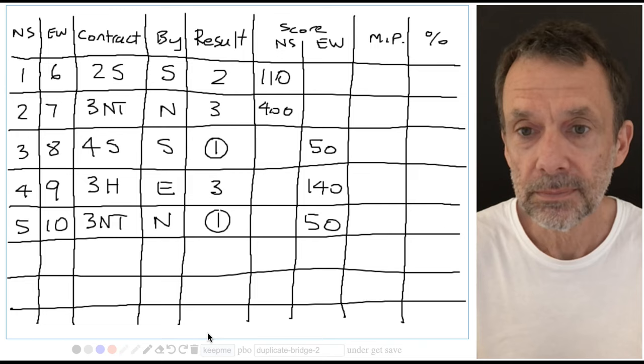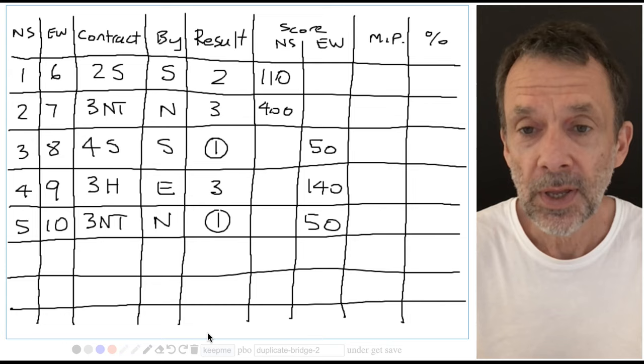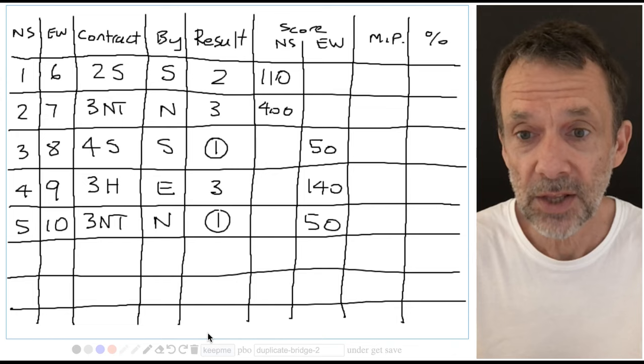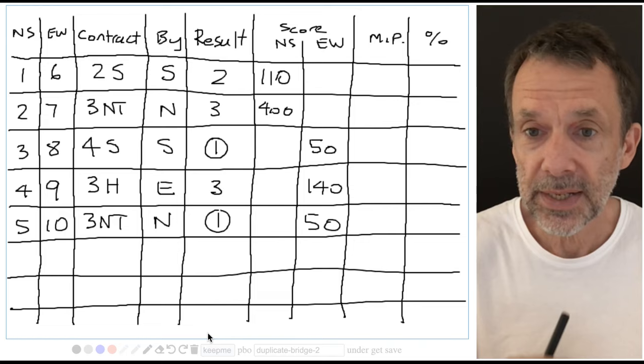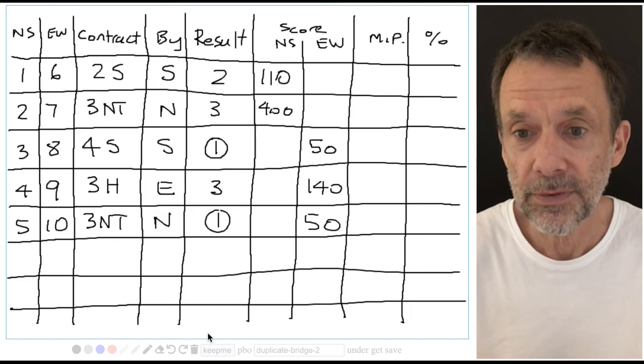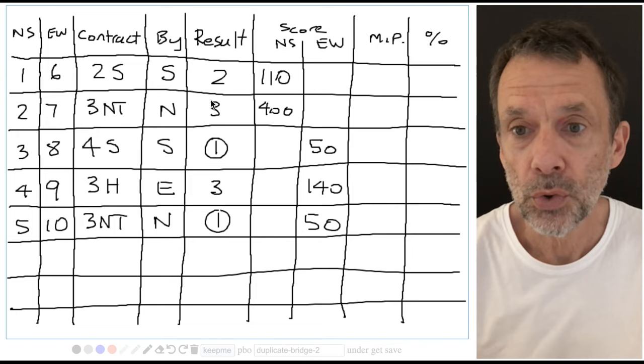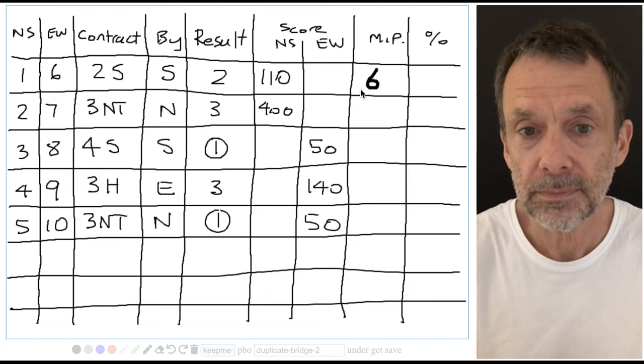Well, 110 is not as good as 400, so nothing there. But 110 is better than minus 50, which north-south pair three scored. So north-south pair one gets two match points for beating pair three, two match points for beating pair four, and two match points for beating pair five. So north-south pair one wins six match points.